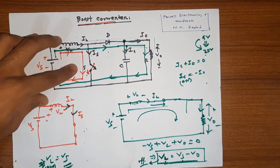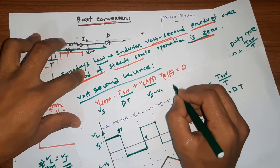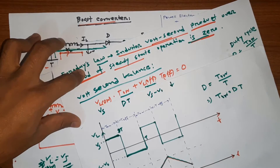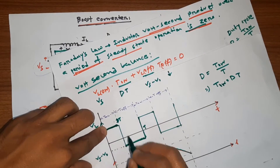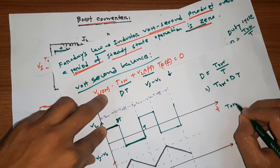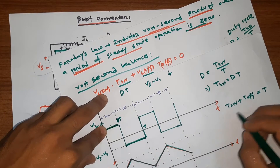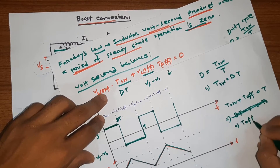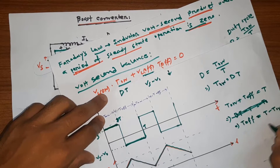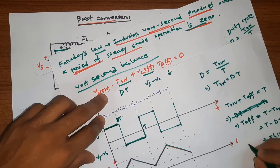Now we need to find VL_off and T_off. T_off is equal to T minus T_on. T_on is DT, so T_off equals T minus DT, which gives T_off equals (1 minus D) times T.